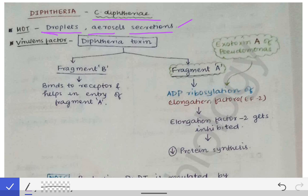Regarding the virulence factor of Corynebacterium diphtheriae: the main job of Corynebacterium diphtheriae itself is minimal — the disease is caused by the diphtheria toxin only, not by the bacteria directly. So the virulence factor is the diphtheria toxin. This toxin is made up of two fragments: Fragment B and Fragment A.